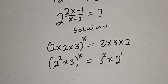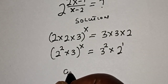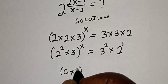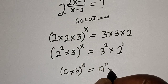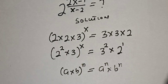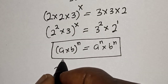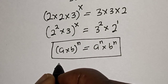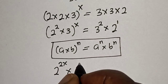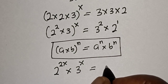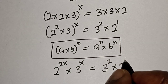This is also raised to the power of 1. Remember this rule: if you have a multiplied by b raised to the power of n, this is equal to a raised to the power of n multiplied by b raised to the power of n. Applying this, we get 2 to the power of 2x multiplied by 3 to the power of x, is equal to 3 squared multiplied by 2 raised to the power of 1.